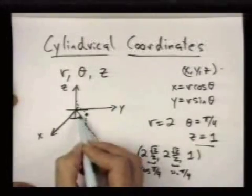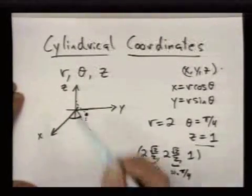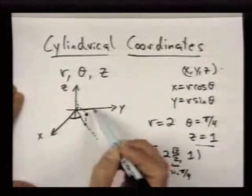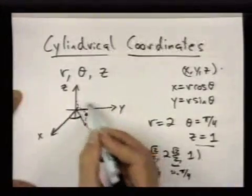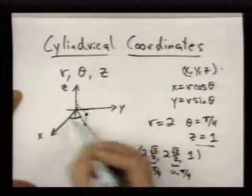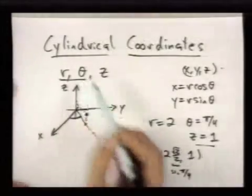The idea with cylindrical coordinates is maybe you have some region in three dimensions that is described very well in terms of its x and y coordinates better using polar coordinates.